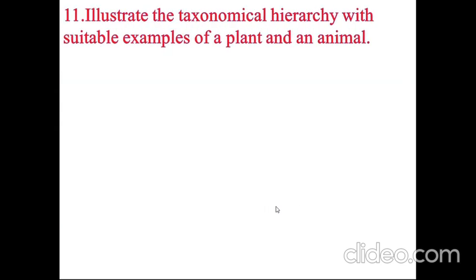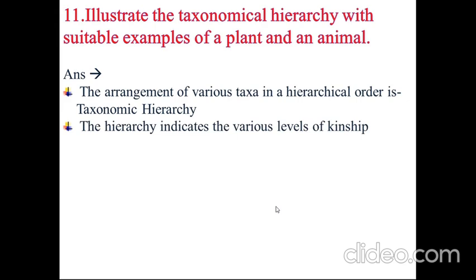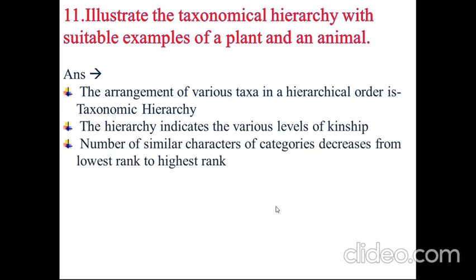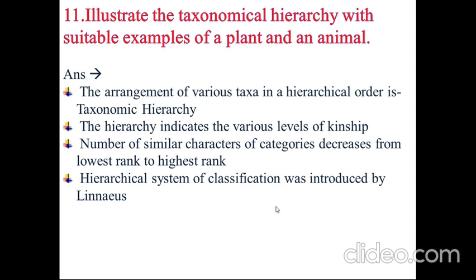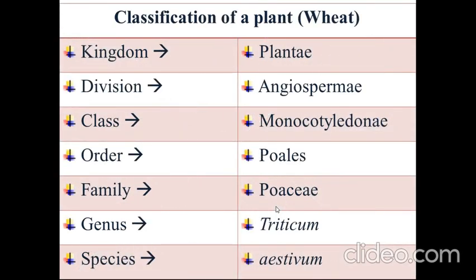Illustrate the taxonomical hierarchy with suitable examples of a plant and an animal. The arrangement of various taxa in a hierarchical order is taxonomic hierarchy. The hierarchy indicates the various levels of kinship. The number of similar characters decreases from lowest rank to highest rank. Hierarchical system of classification was introduced by Carolus Linnaeus. The hierarchy of major categories is: species, genus, family, order, class, etc. For example, wheat falls under kingdom Plantae, division Angiospermae, class Monocotyledonae, order Poales, family Poaceae, genus Triticum, and species aestivum.